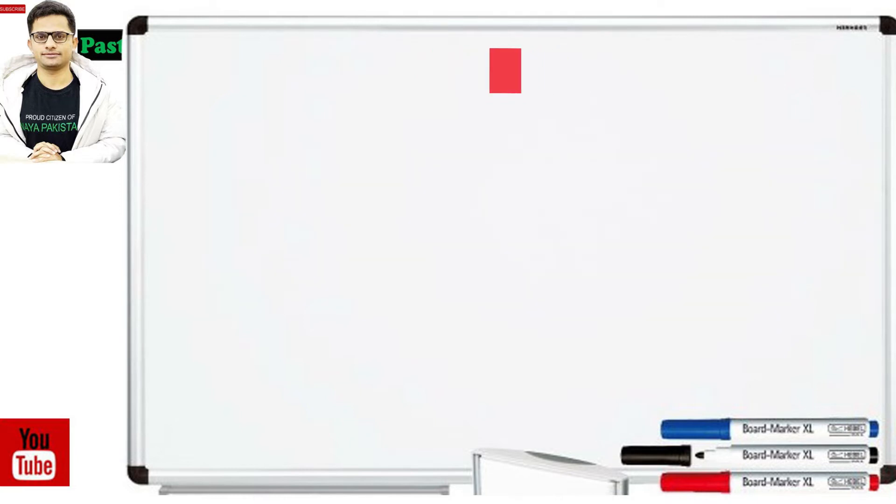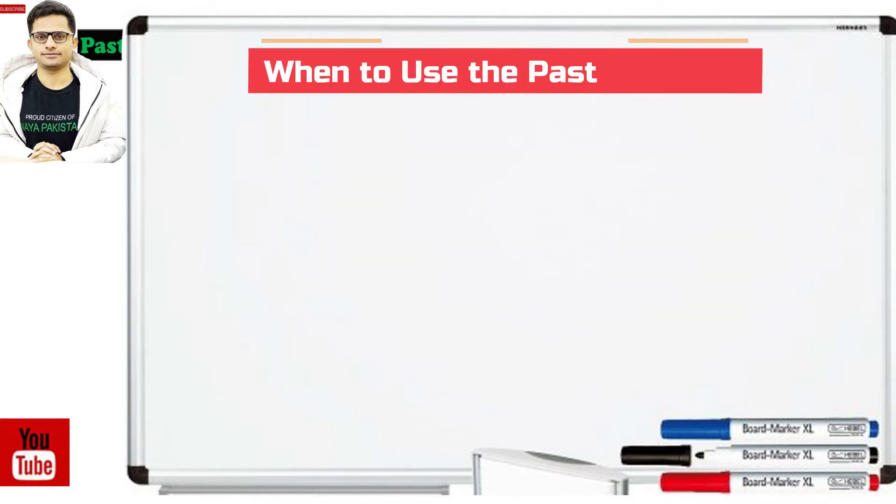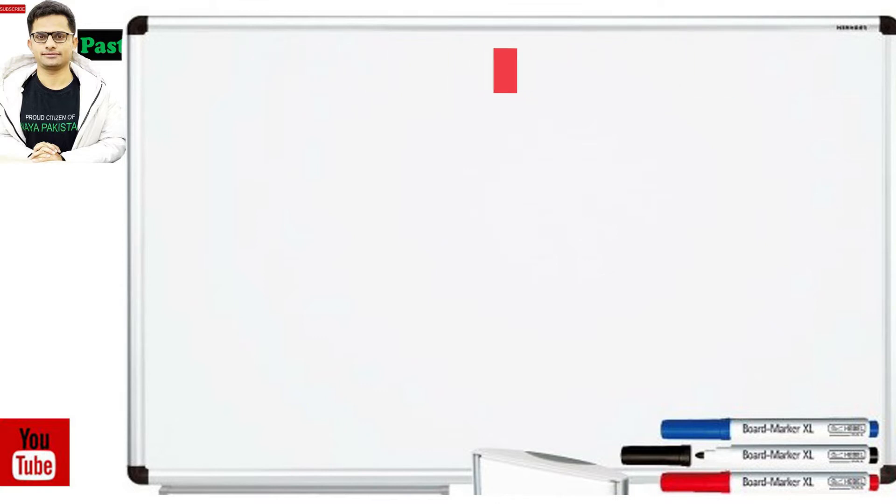When to use the past perfect? اس کا استعمال یہ واضح کرنے کے لیے کیا جاتا ہے جب ماضی میں ایک واقعہ دوسرے واقعے سے پہلے پیش آیا تھا. And it doesn't matter which event is mentioned first in a sentence. How can we easily make sentences of past perfect?